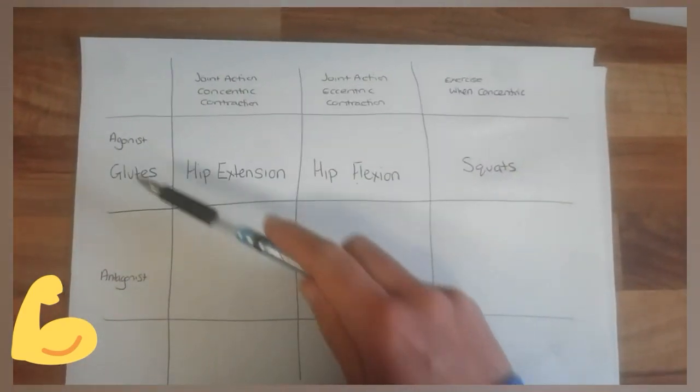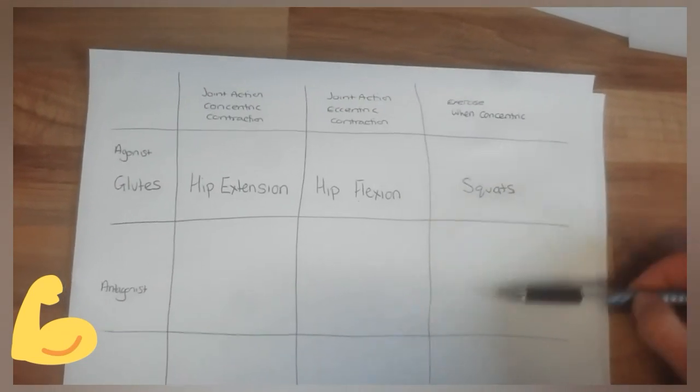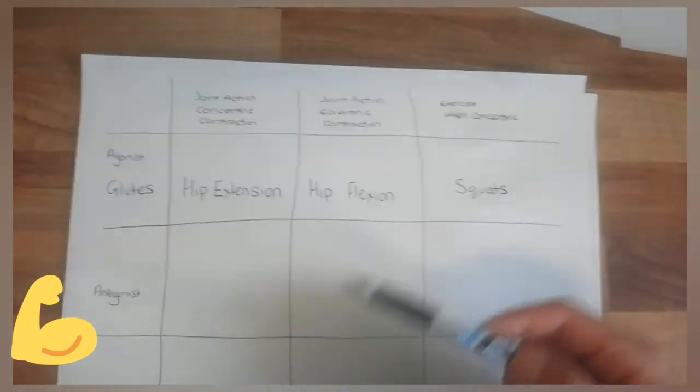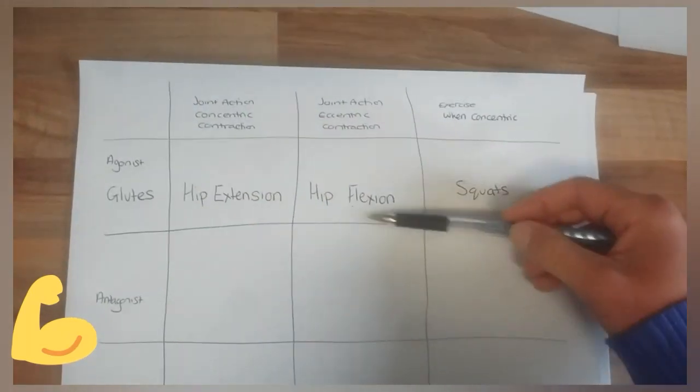Now in order to find the antagonist for this muscle and for that exercise, so you can have agonist, antagonist, supersets, etc., you want to be able to have a joint action opposite.